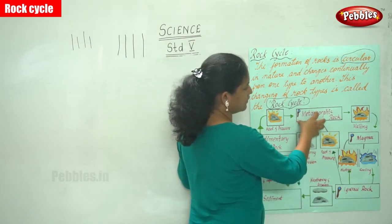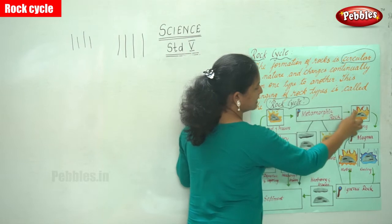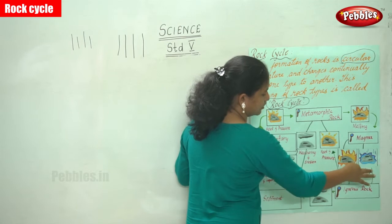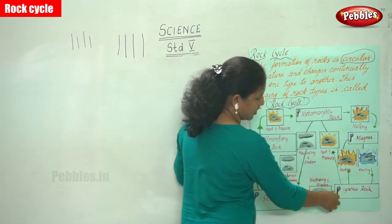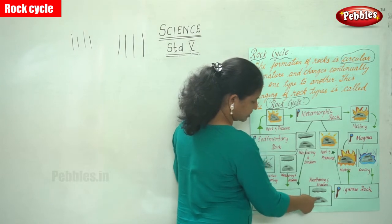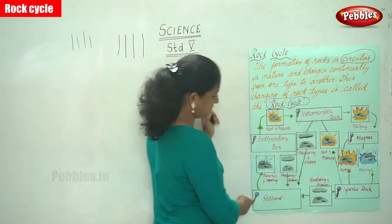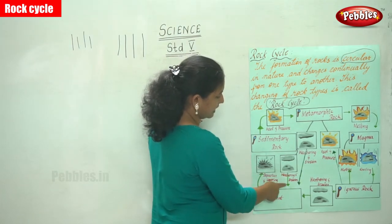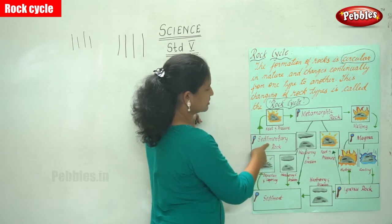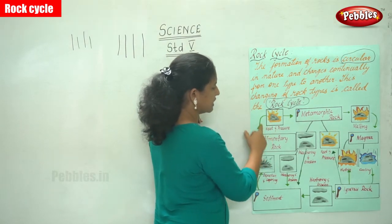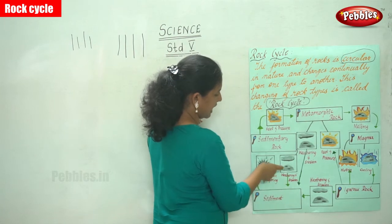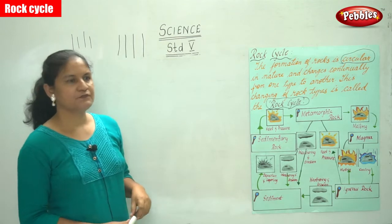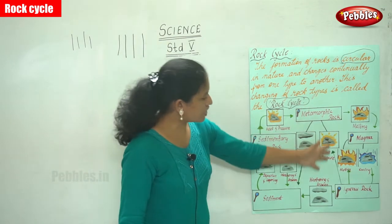In the diagram, we see that metamorphic rocks on melting form magma. Then on cooling, it becomes igneous rock. Through weathering and erosion, it becomes sediment. Through deposition and layering, followed by further weathering and erosion, we get sedimentary rocks. And due to heat and pressure, igneous rock and sedimentary rocks become metamorphic rocks.